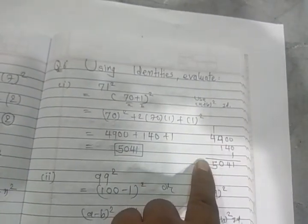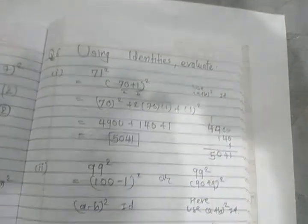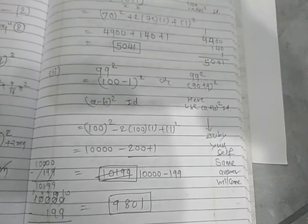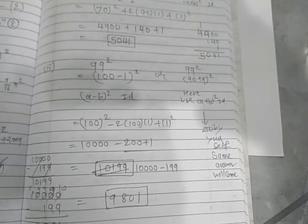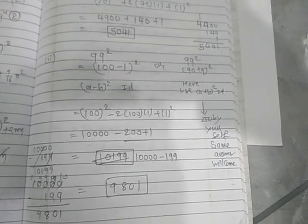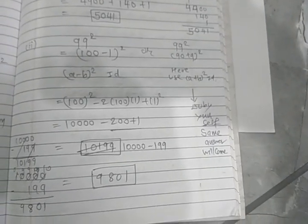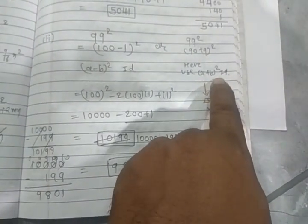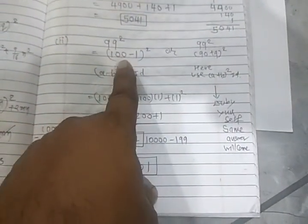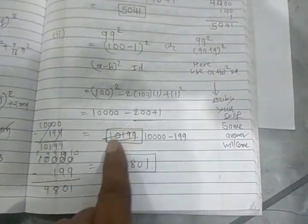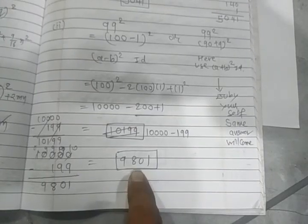Ninety-nine square means ninety plus nine whole square bhi chalega aur hundred minus one whole square bhi chalega. Agar ninety plus nine whole square se aapko karna hai then you have to use a plus b whole square identity, and you have to use a minus b whole square identity. Aap koi bhi method se kar sakte ho, correct answer toh aapka same aayega.